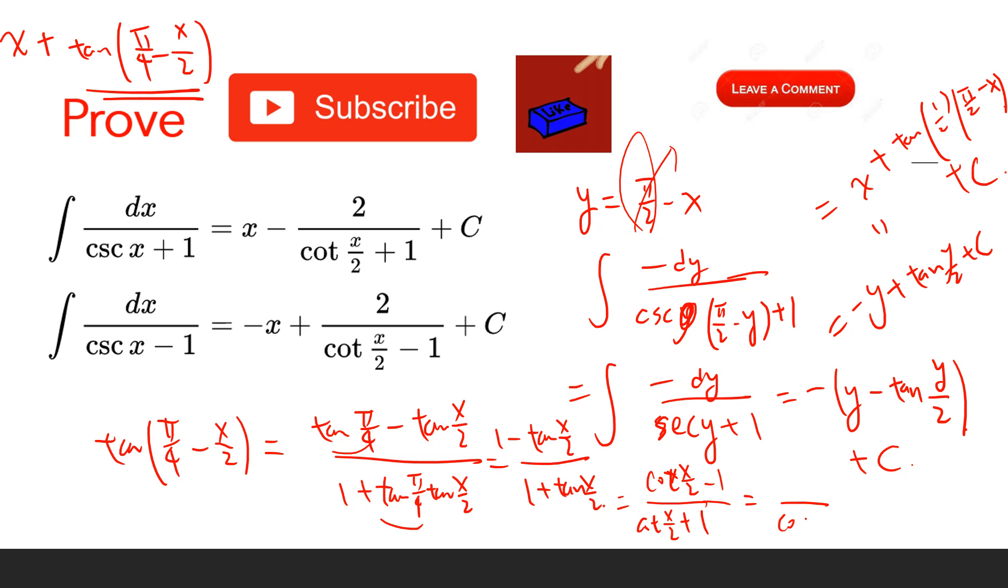And this term can be written as cot(x/2) plus 1 minus 2 over cot(x/2) minus 1. The constant we can throw away. So finally we get negative 2 divided by cot(x/2) plus 1, with the x term.